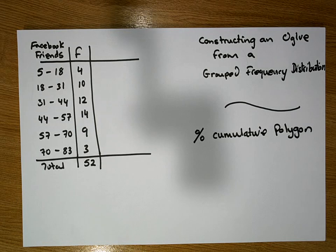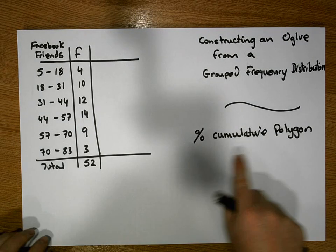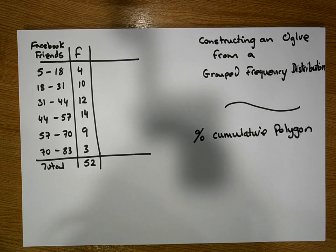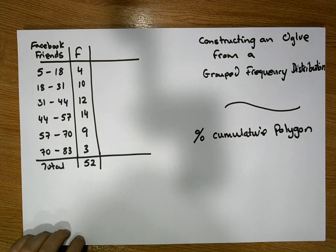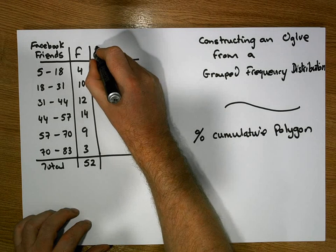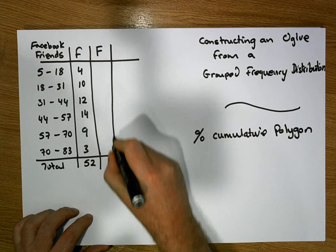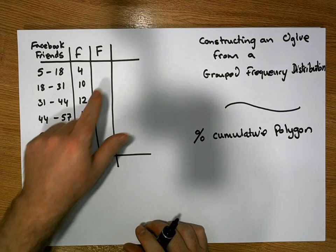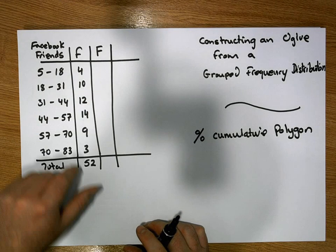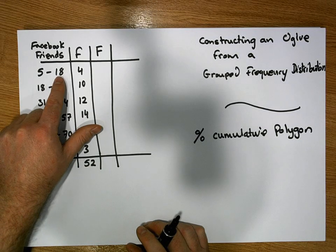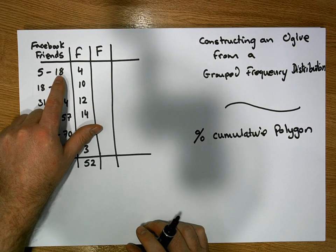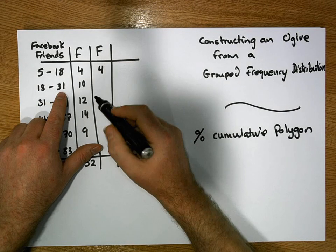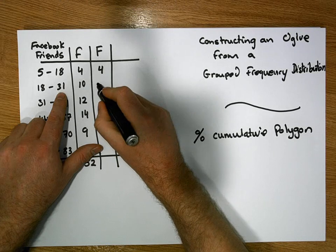So an ogive is a cumulative polygon or a percentage cumulative polygon. So for us to create the ogive what we need to do is we need to create the cumulative frequencies. The cumulative frequencies are going to be represented by a capital F. And they're simply an accumulation of the frequencies as we go down through the classes. The question that we ask when we're constructing the cumulative frequencies is, how many observations were less than the upper bounds of our classes? So how many observations were less than 18? Well there was 4 observations less than 18. How many were less than 31? Well there's the 10 and the 4. That gives us 14.